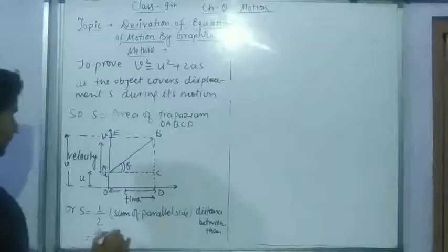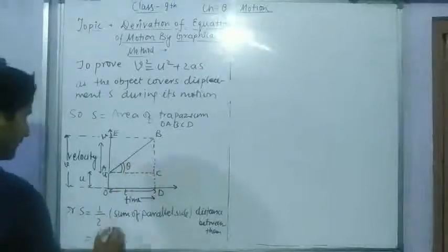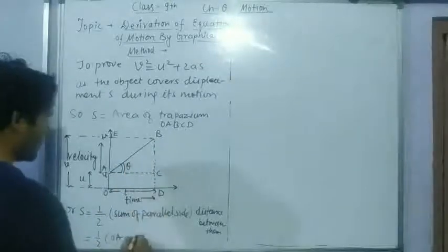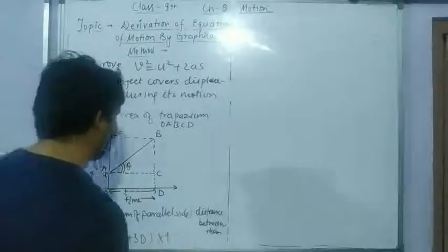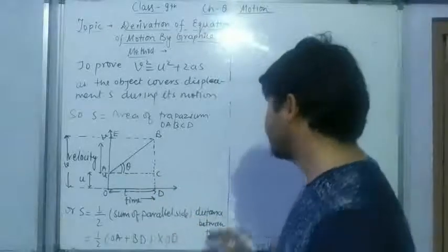It will be 1/2 sum of parallel sides, again OA and it will be OA plus it will be BD, multiply time T. Or we may write OD. Then what will be,